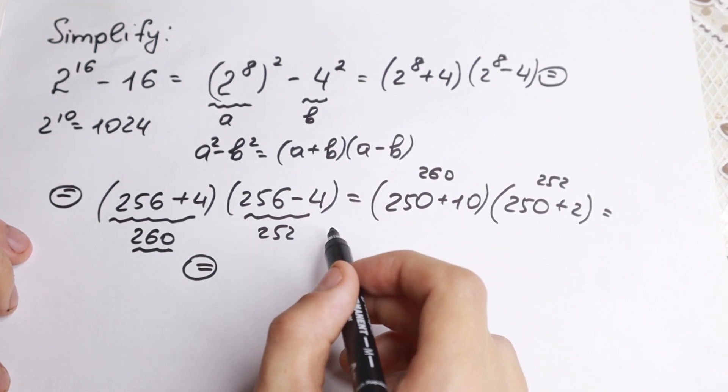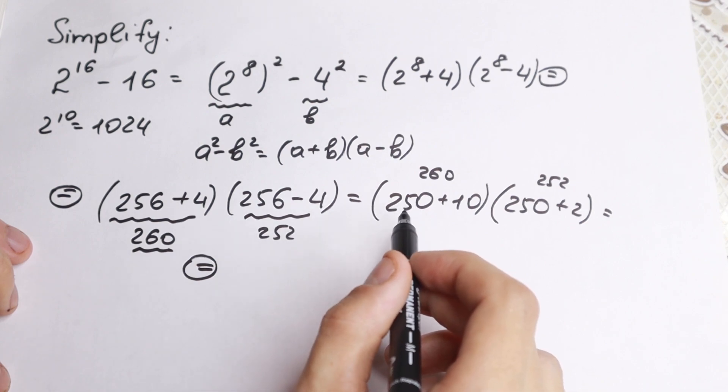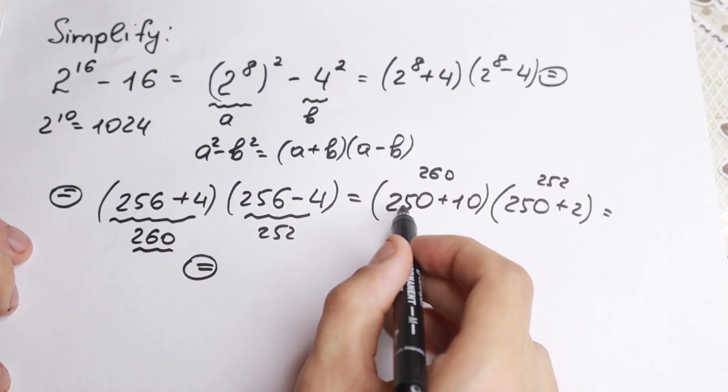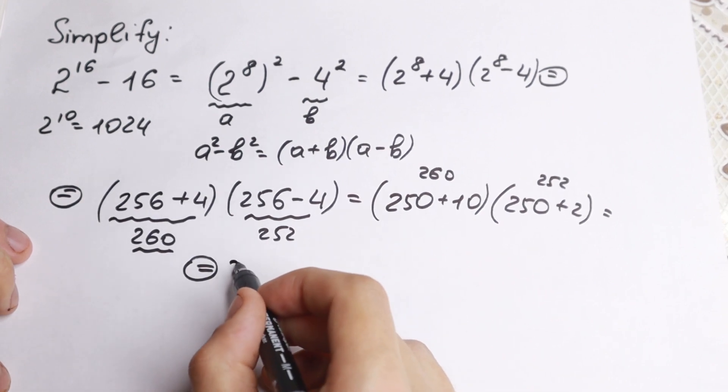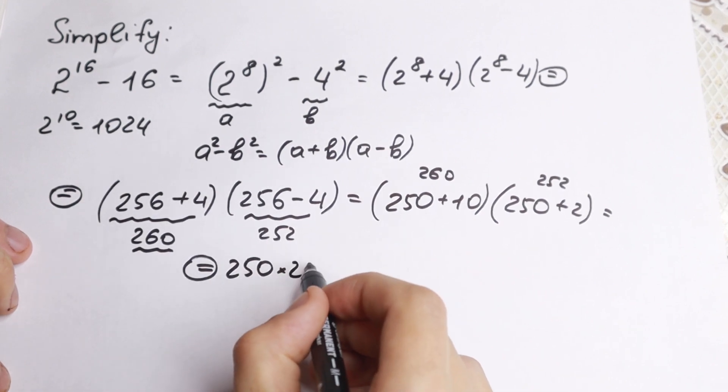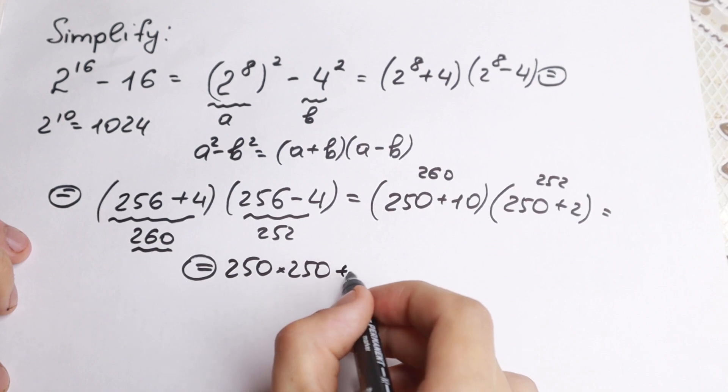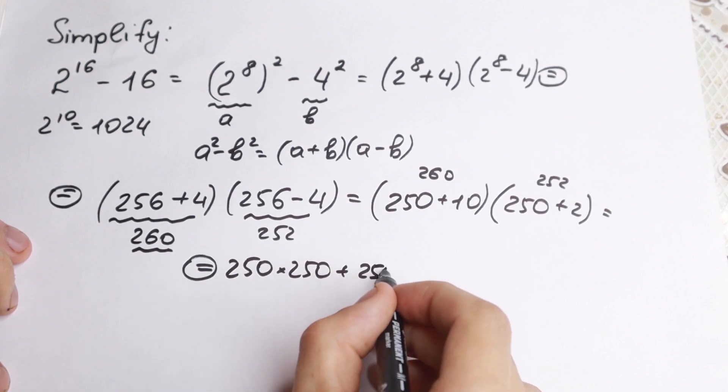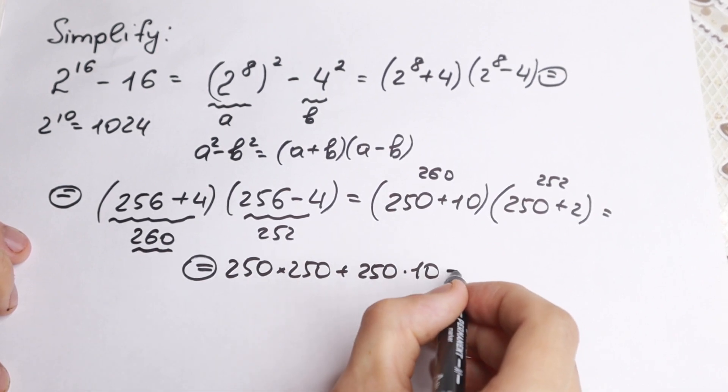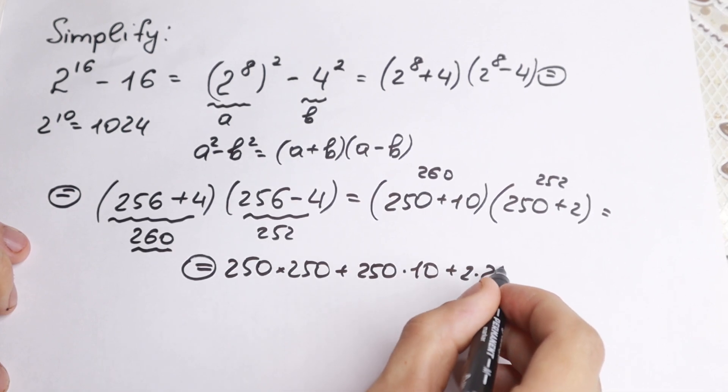Parentheses times parentheses. First of all, we need to multiply, at first, this 250 times 250. This is our first step. Second step, plus 250 times 10, plus 2 times 250, and plus 2 times 10.